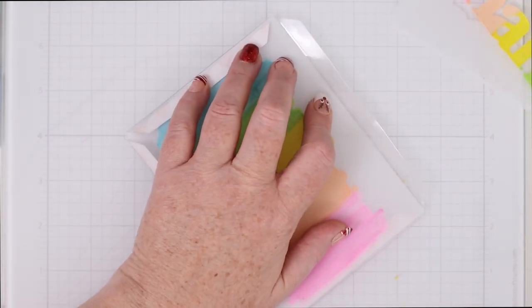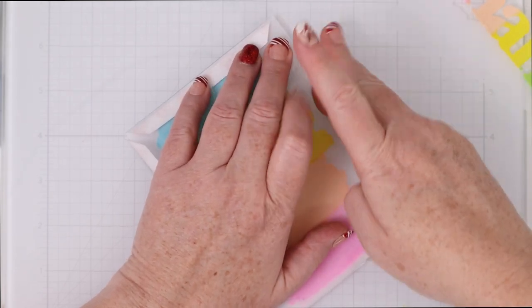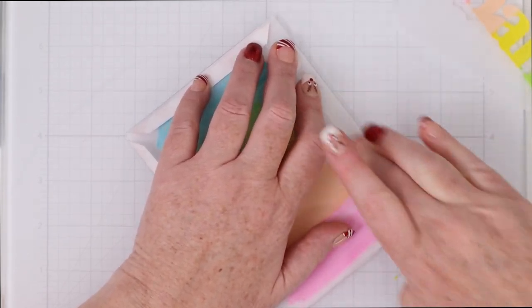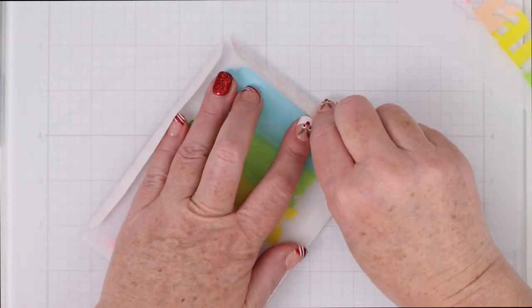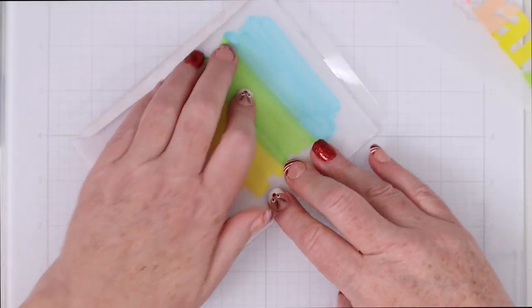Okay so I put one of the painted rainbows in there with the vellum and I take off those little protective layers off of the adhesive and just lay it down.